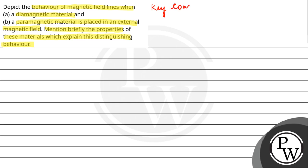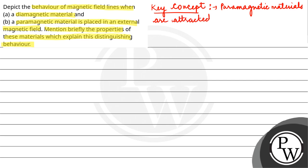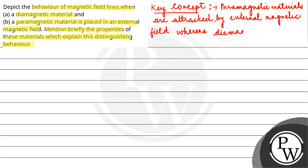Our key concept here is: paramagnetic materials are attracted by an external magnetic field, whereas diamagnetic materials are repelled.